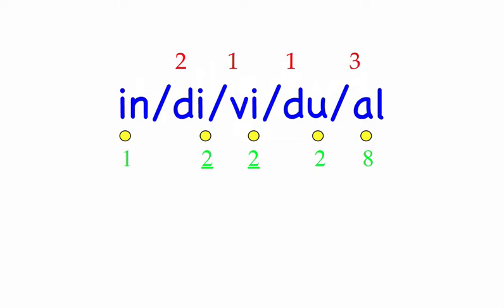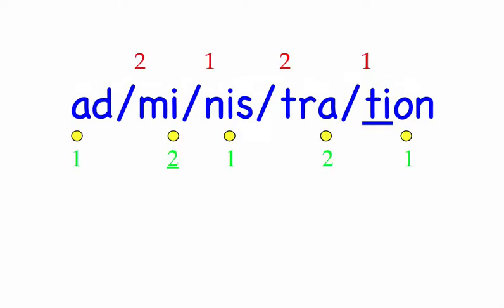Row three. Administration. There is a new administration moving into the office. Five syllables. First syllable: Ad, two sounds, A-D. Mi, two sounds, M-I. Nis, three sounds, N-I-S. Trey, three sounds, T-R-A. Sean, three sounds, Sh-ah-N. Ad-mi-nis-trey-tion. Mark the word. Administration.